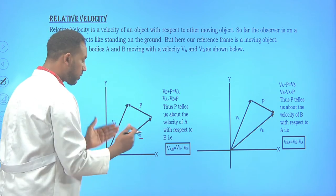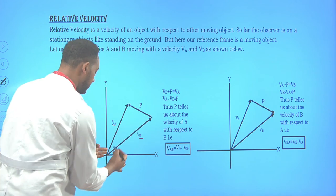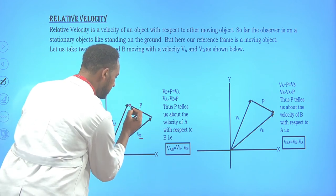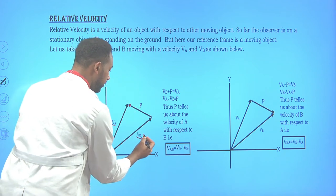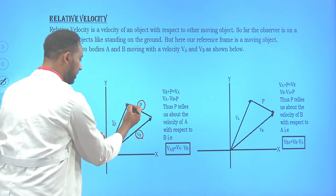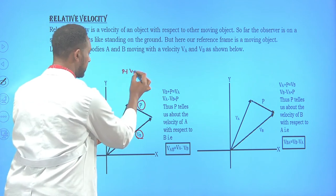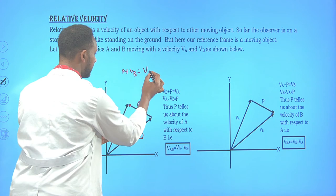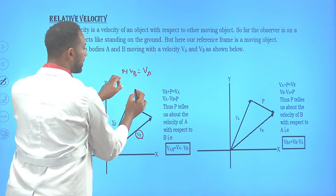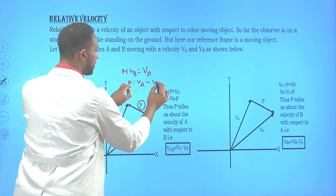To determine the relative velocity of one car as expressed by the other, suppose the driver on car B tries to describe the velocity of car A. From vector addition, it is possible to determine the resultant of these two vectors: V_A = P + V_B, so P = V_A − V_B.